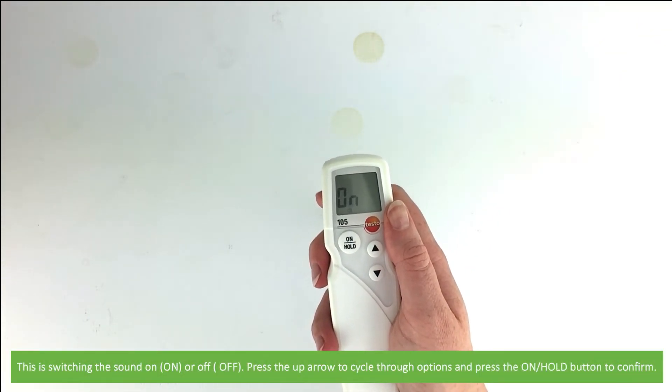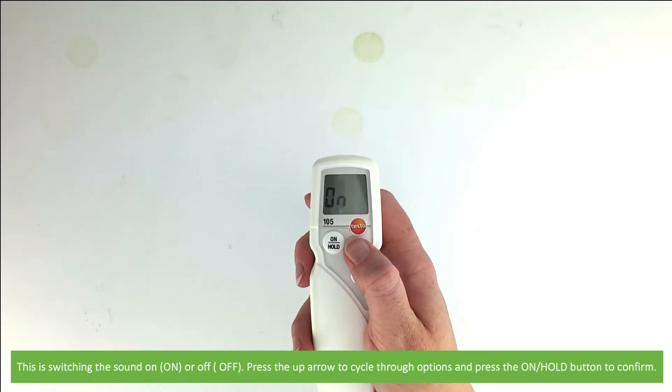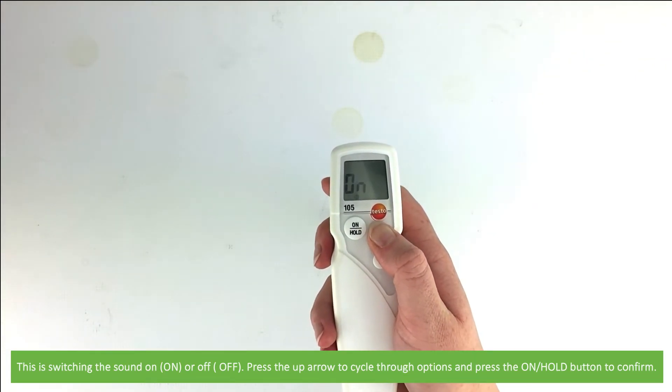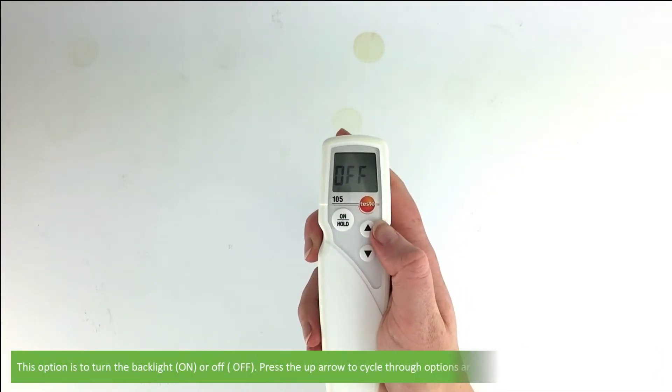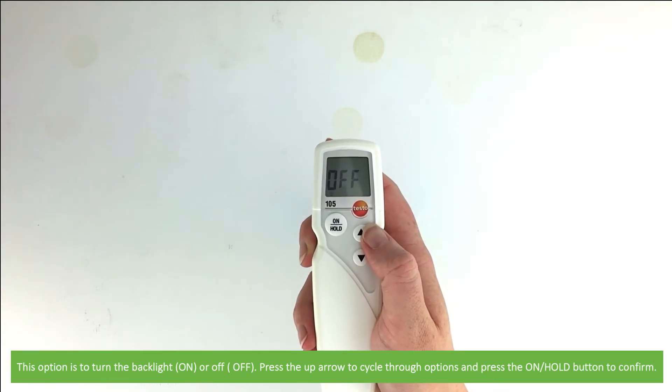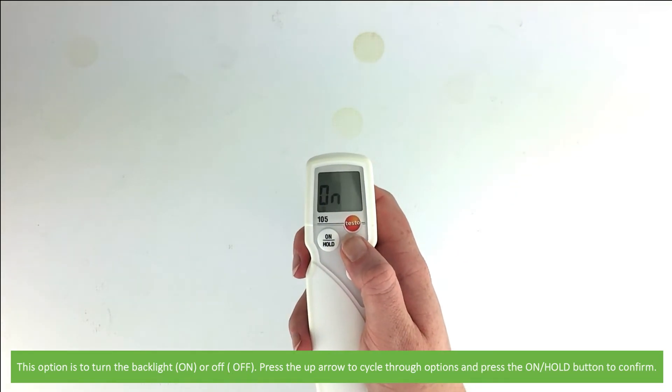This is switching the sound on or off. Press the up arrow to cycle through the options and on hold to confirm. This option is to turn the backlight on or off. Press the up arrow to cycle through the options and on to confirm.